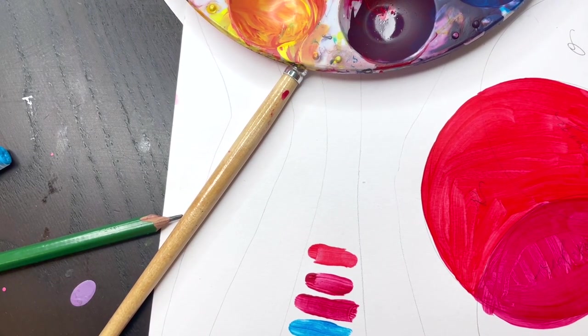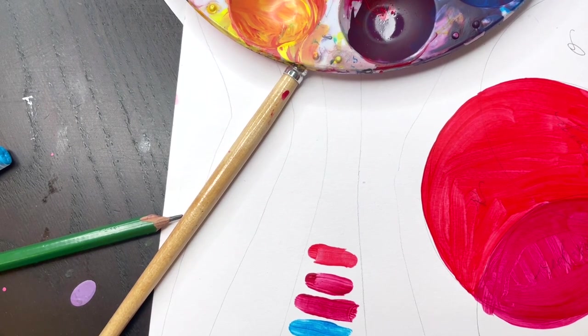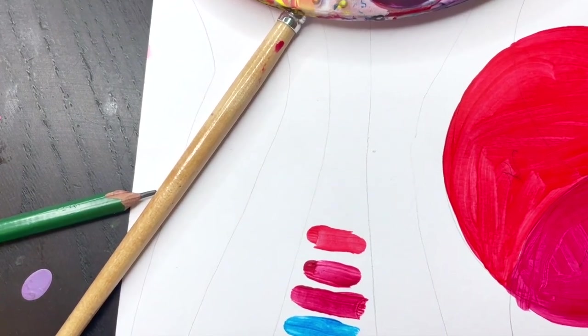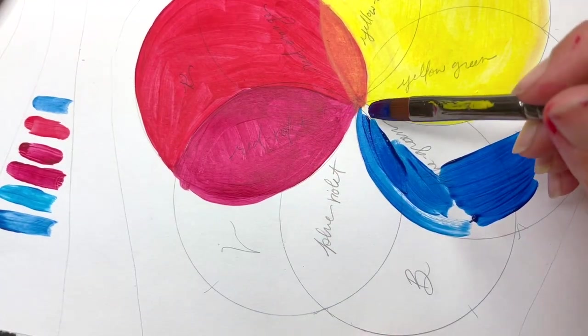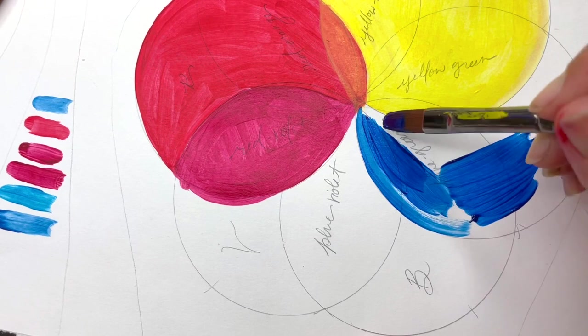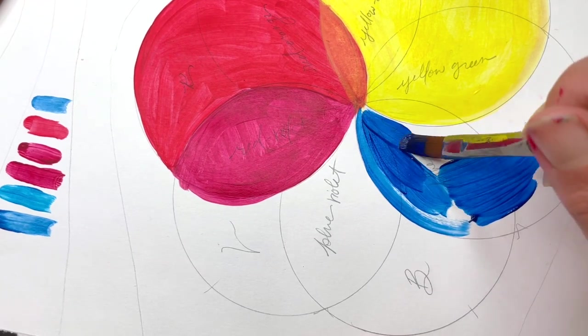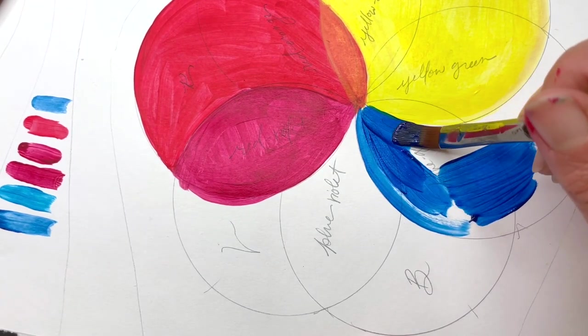You can see right here with the two reds: when I put them on the page, I can much better see the difference between the bright red and the crimson red. For this color wheel, you will fill in each of your primaries first, filling the entire circle with the primary color.